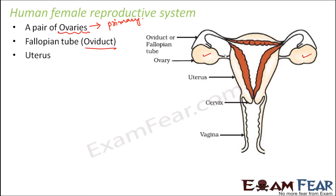There is a uterus, which is a bag-like structure. If you see, this entire structure is the uterus. Basically, the uterus is the structure where a baby is nurtured for nine months inside a female's body. The baby remains in the uterus, grows and develops, and then gets delivered at the end of nine months.